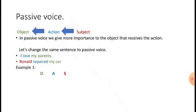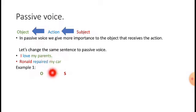The format of passive voice is: object first, then the action, then the subject. In 'I love my parents,' the object is 'my parents,' so we write that first. Then the action 'love' comes in the middle, and the subject 'I' comes at the end — with the word 'by' added. So 'I love my parents' changes to 'My parents are loved by me.'